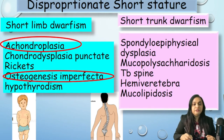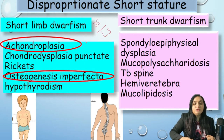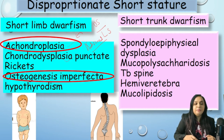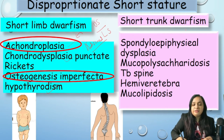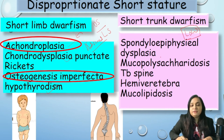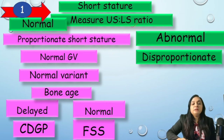If the upper segment to lower segment ratio is abnormal, we have disproportionate short stature. If the US/LS ratio is increased (advanced), it is short limb dwarfism, seen in achondroplasia, chondrodysplasia punctata, Rickets, osteogenesis imperfecta, and hypothyroidism — where the limbs are shorter than the trunk. If the US/LS ratio is low, it is short trunk dwarfism, seen in conditions affecting the vertebrae: spondyloepiphyseal dysplasia, mucopolysaccharidosis, kyphoscoliosis, hemivertebra, and mucolipidosis.